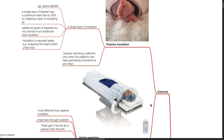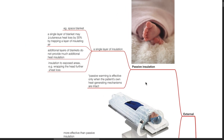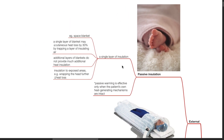Regarding external methods, passive insulation involves the use of a single layer of insulation such as a space blanket. A single layer of blanket may reduce cutaneous heat loss by 30% by trapping a layer of insulating air. Additional layers of blankets do not provide much additional heat insulation. Insulation to exposed areas such as wrapping the head further reduces heat loss. Passive warming is effective only when the patient's own heat-generating mechanisms are intact.